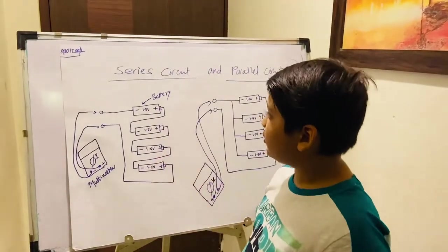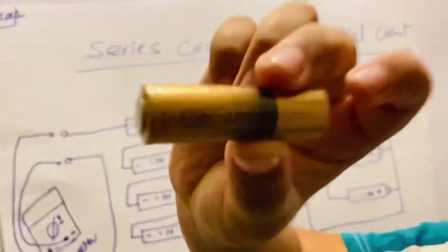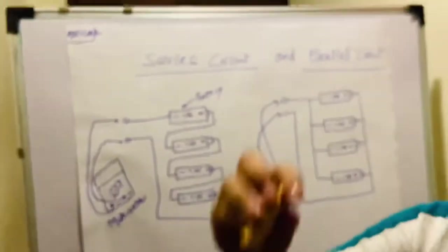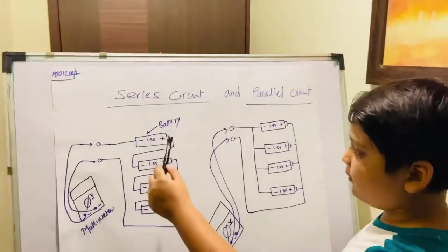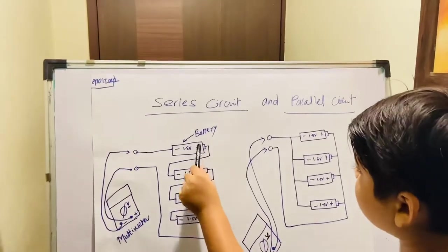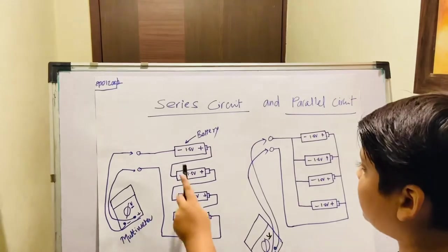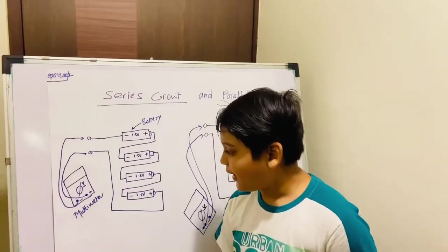So these are the batteries we are going to use, and this is the actual battery. First of all, let's see what is the meaning of the plus and minus. The plus means positive and the minus means negative. Each battery's voltage is around 1.5 volts.